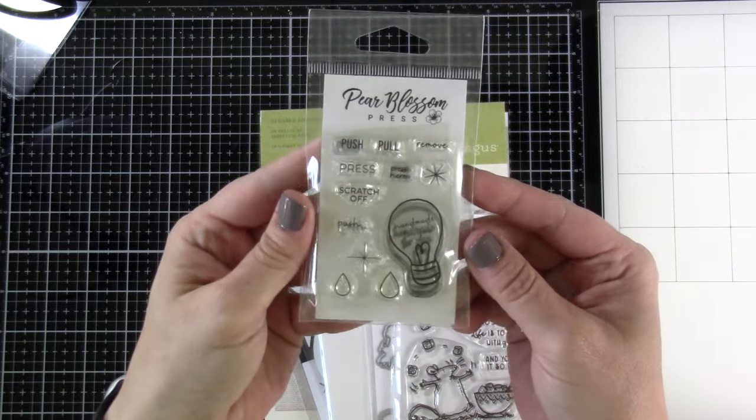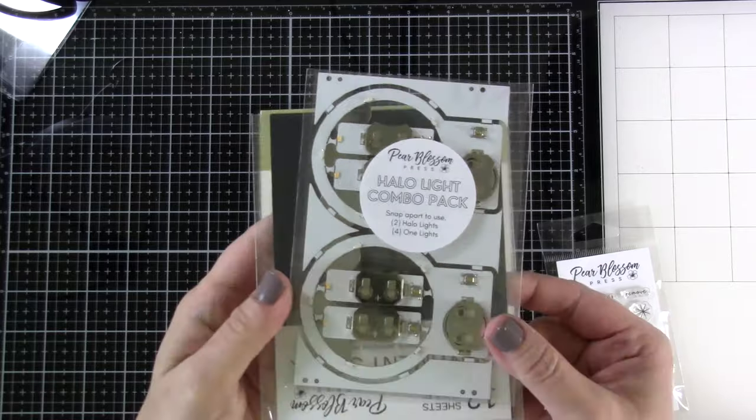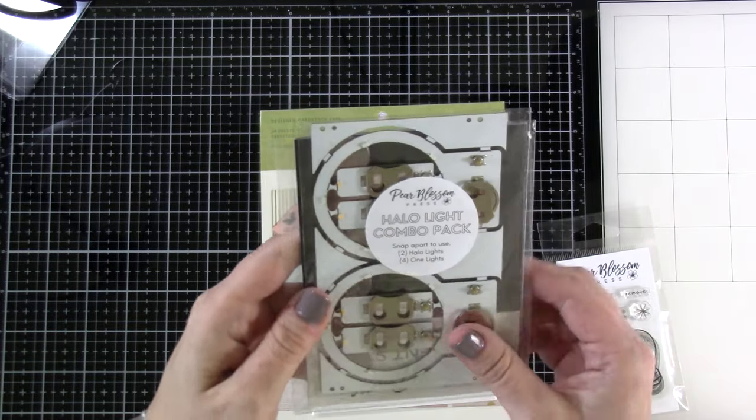I have the Pear Blossom Press stamp set and here's the Halo Lite. This is the Halo Lite combo pack. It has two Halo lights and four one lights, so it's quite a great deal.